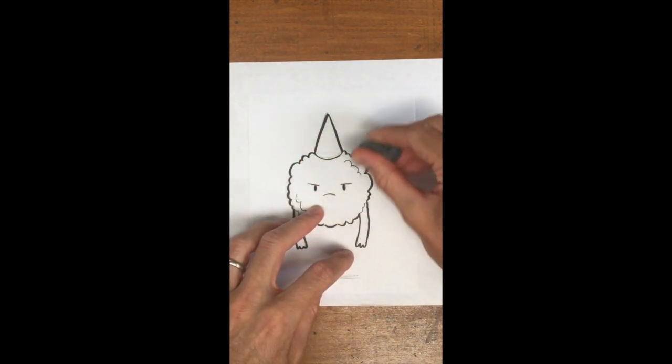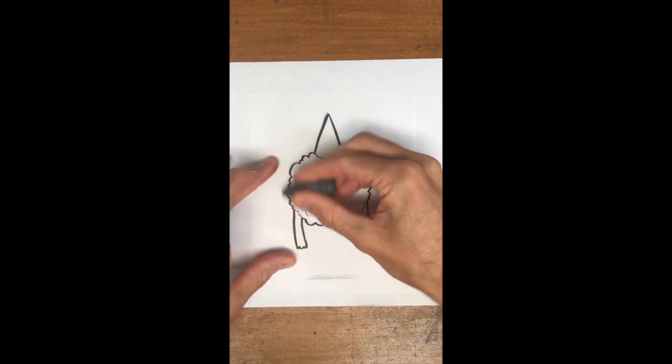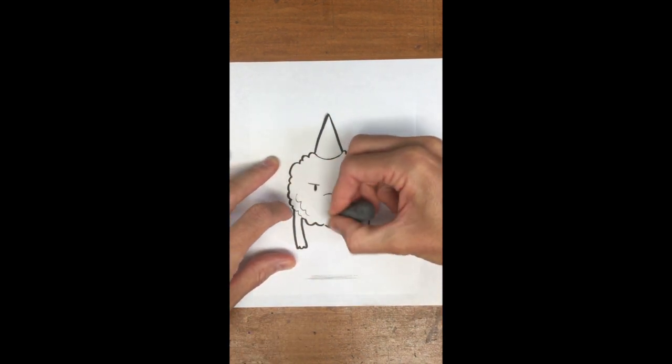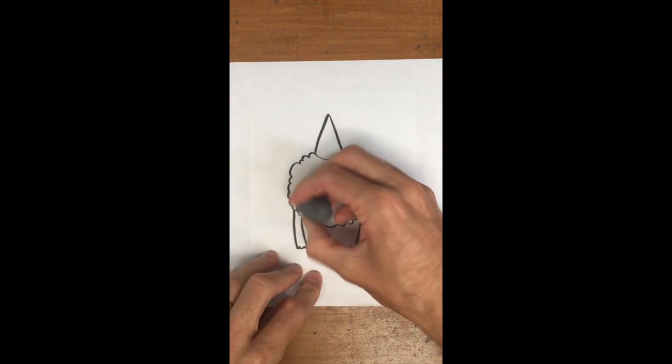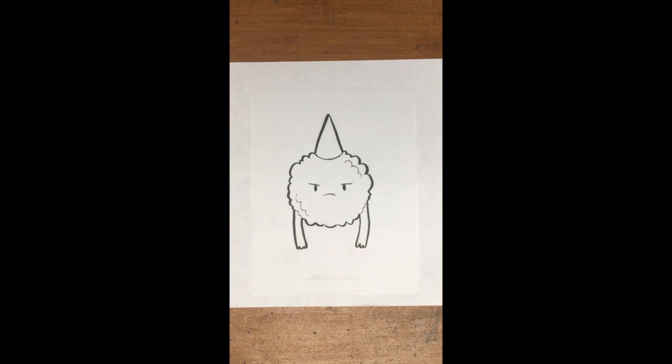I'm using a kneaded eraser to get rid of all the extra pencil lines to prepare Meatball Wizard for coloring. I was going to leave the shadow as graphite, but I erased it. Oh well.